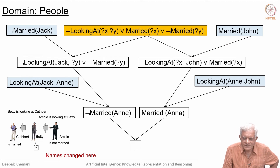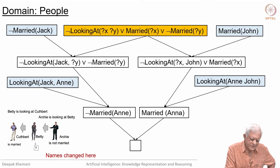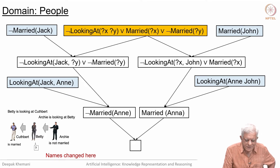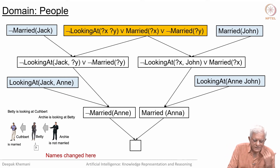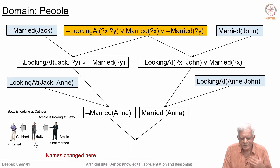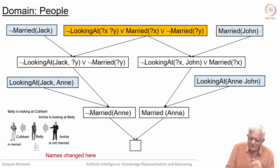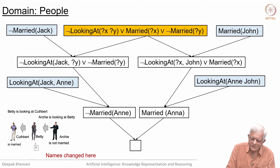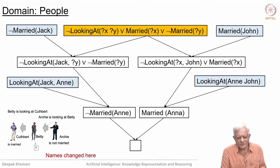Let us look at a problem we had seen earlier — in the domain of people, where some names have been changed, so there may be a mismatch of names in the figure and diagram. What was given was: John is married, Jack is not married — the stuff in blue is the knowledge base. Anne is looking at John, and Jack is looking at Anne. We have to show there is an unmarried person looking at a married person — that is the goal, and the negation of the goal is here. We saw this derivation before; this is the graph for the derivation, and you can see that this is not an SLD resolution.